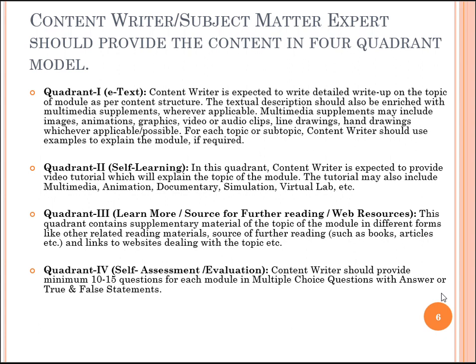The third quadrant is dedicated for 'learn more' sources for future reading and web resources. This quadrant contains supplementary material on the topic of the module in different forms, like other related reading materials, sources for future reading such as book articles, and links to websites dealing with the topics. The fourth quadrant is dedicated for self-assessment and evaluation, where the writer should include a minimum of 10 to 15 questions in the form of multiple choice questions with answers or true and false statements.